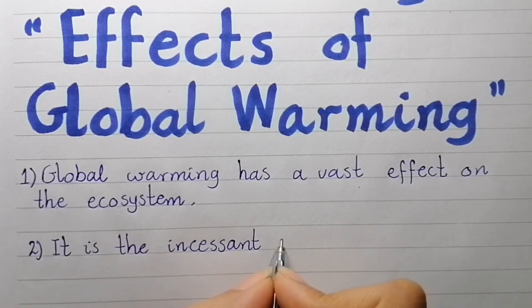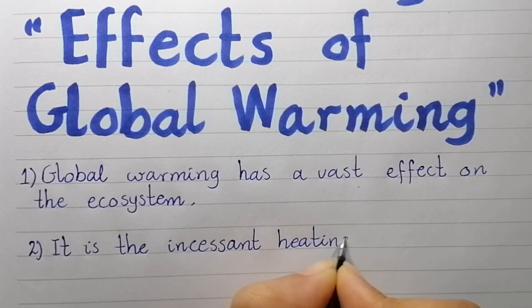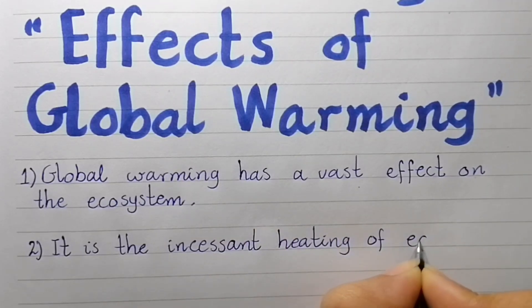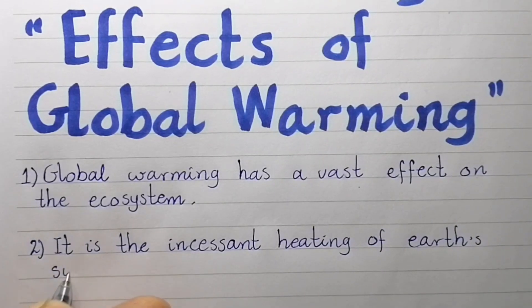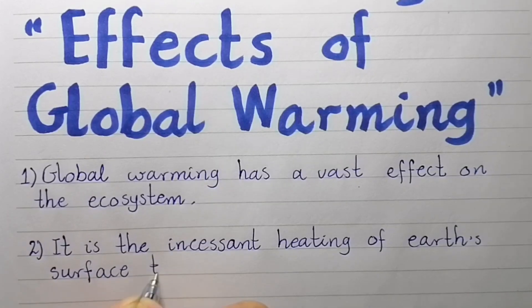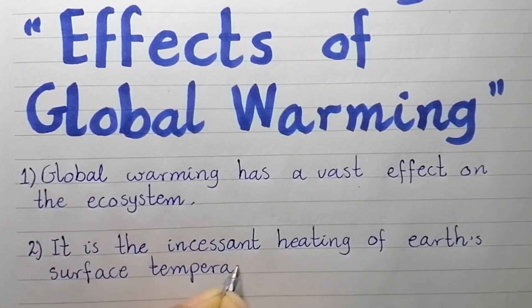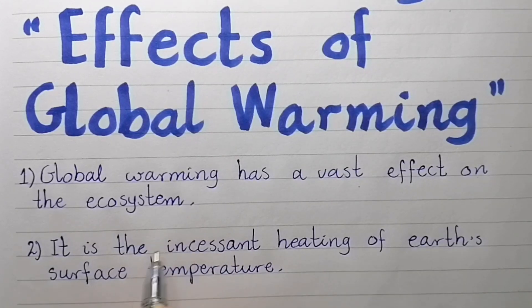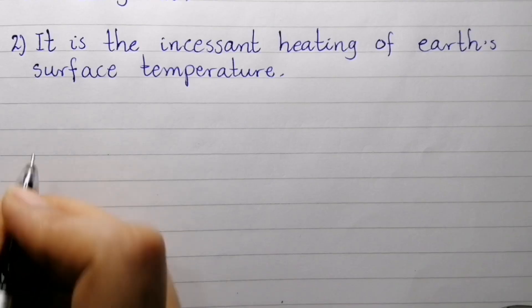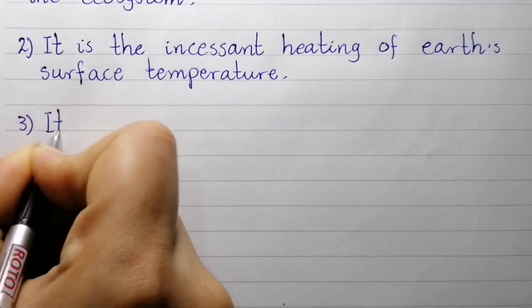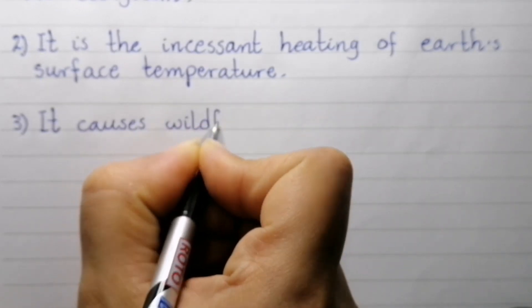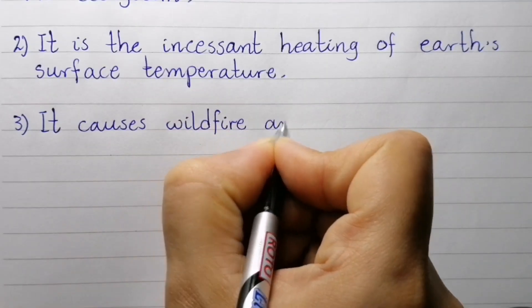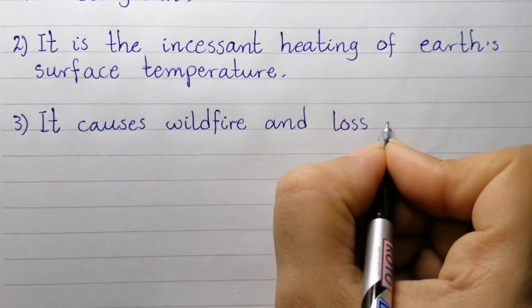Point number two: It is the incessant heating of earth's surface temperature. Point number three: It causes wildfire and loss of green cover.